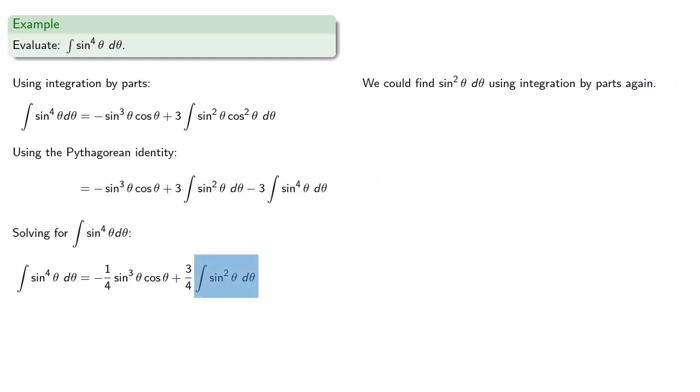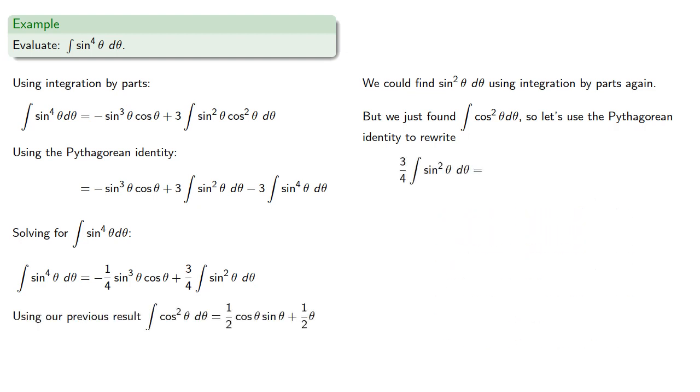Now we could find sine squared theta d theta using integration by parts again, but we just found the integral of cosine squared theta d theta, so let's use a Pythagorean identity to rewrite this as...